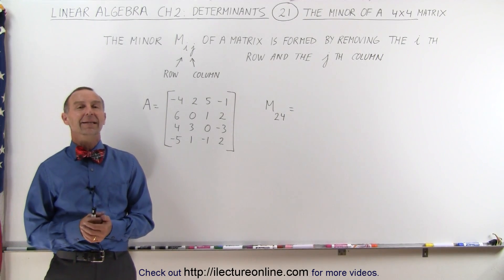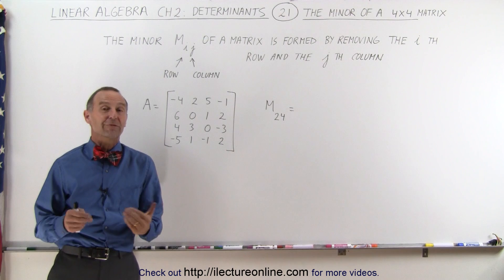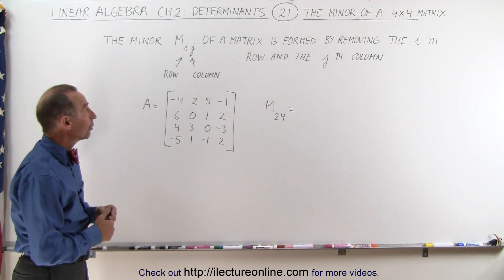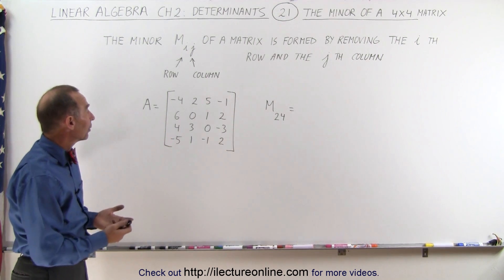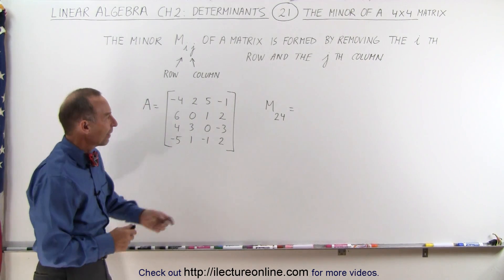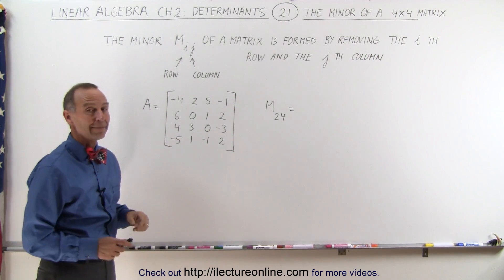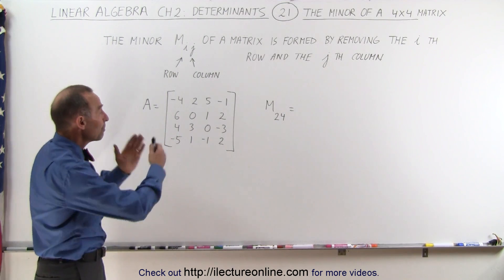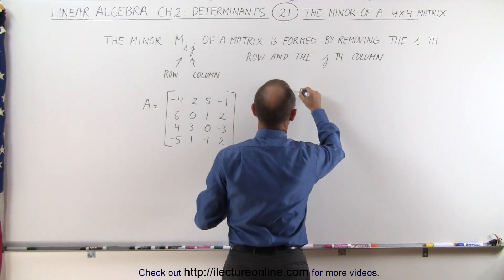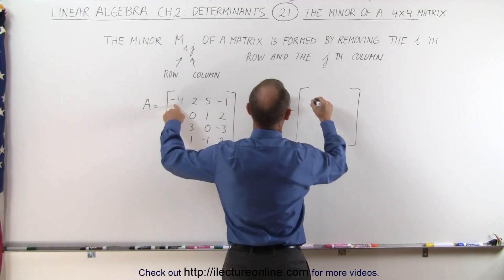Welcome to our lecture online. Just to make sure we don't have any confusion with finding minors, here we're going to find the minor of a 4x4 matrix. We're trying to find M24 of the matrix A. What we do is we repeat or copy the matrix — we put all the same elements as before.